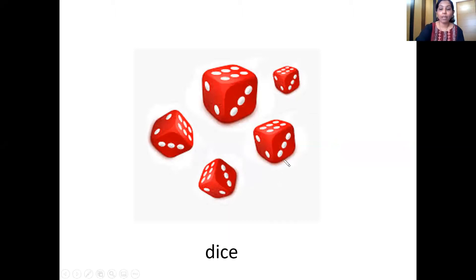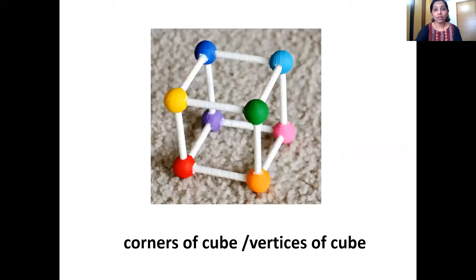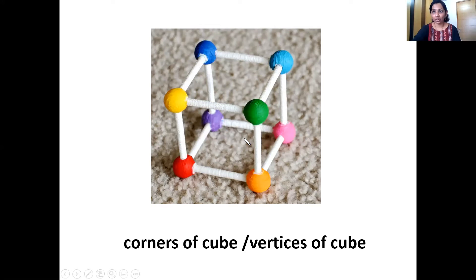Cube is a 3D shape. It features all right angles. These are the angles. And they have height, width, and depth. And all are equal. The height, width, depth — all of them are equal.